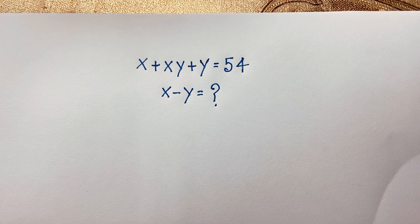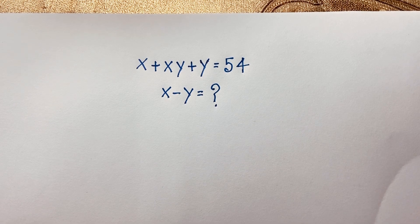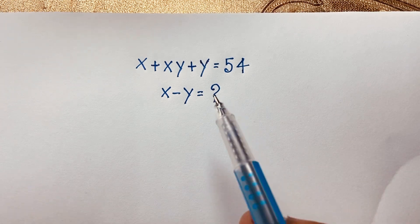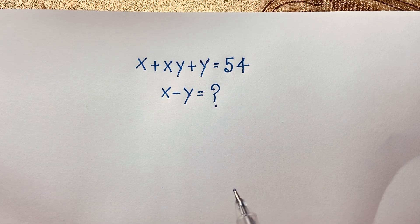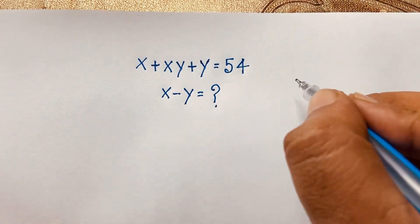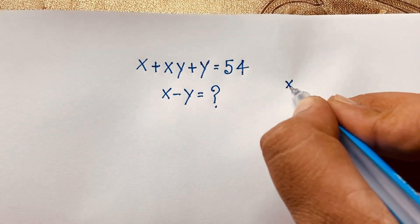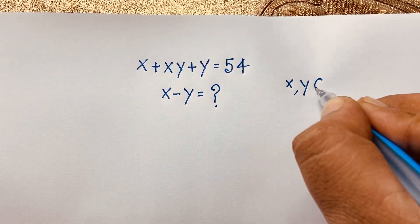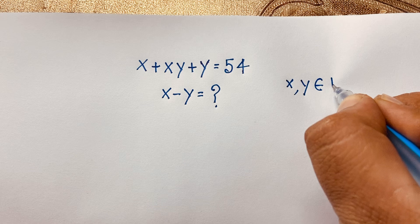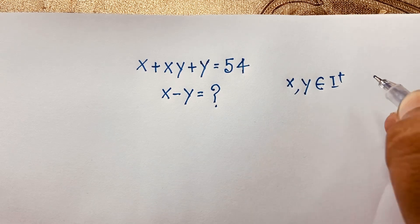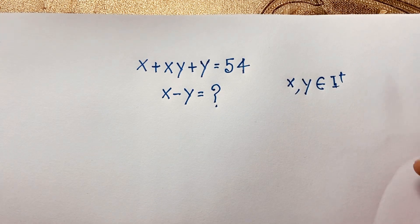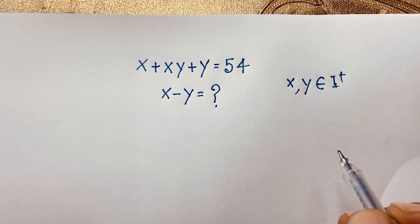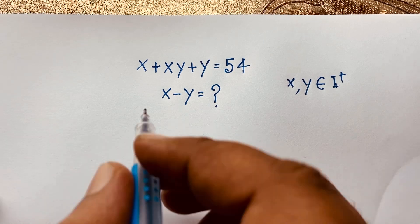Hello everyone. In this video we solve a nice math problem: x plus xy plus y is equal to 54. Find x minus y, where x and y are positive integers.